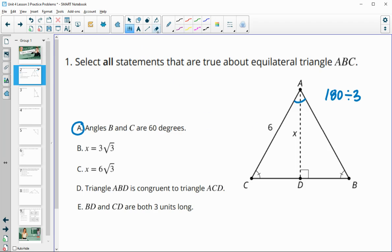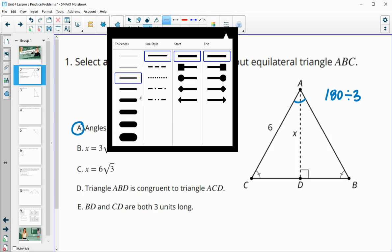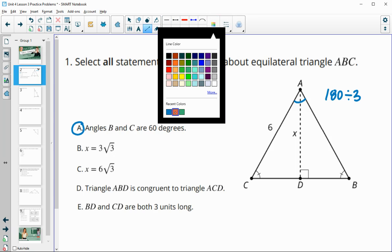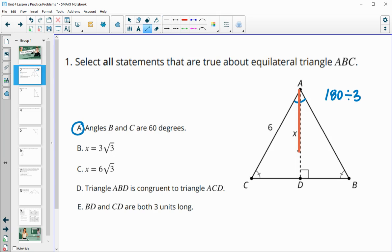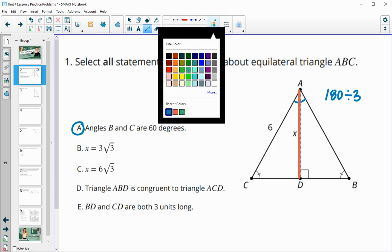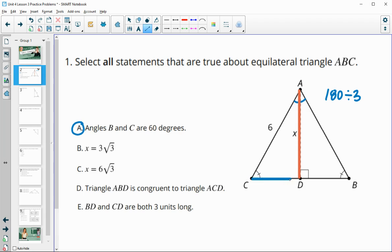B asks us if this altitude here is 3 square root 3. So this altitude here is actually taking this little short leg here times the square root of 3.